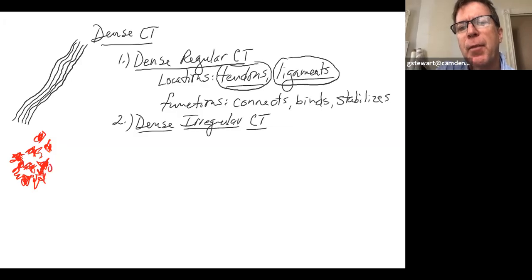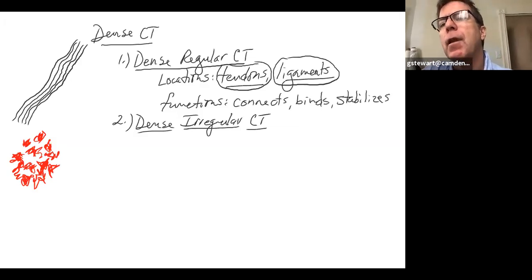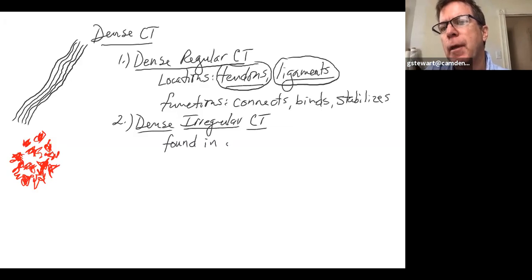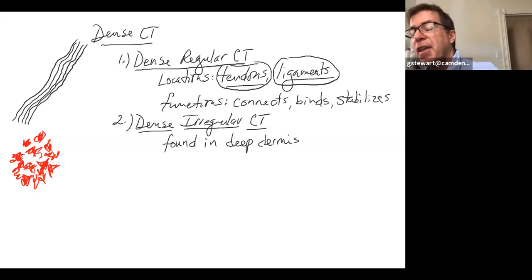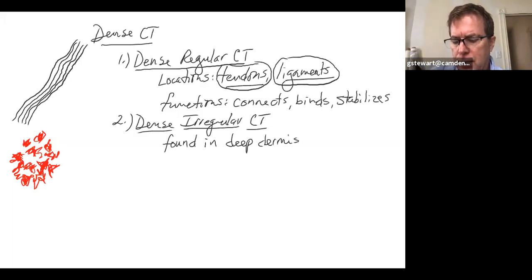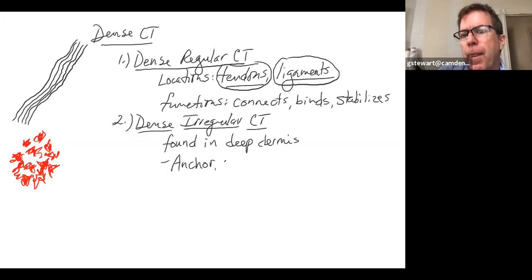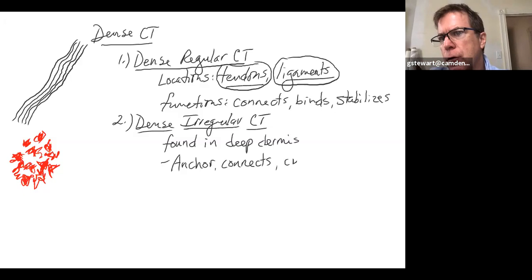Dense irregular CT is found largely in the deepest layers of the skin — the deep dermis, making up the final thickest layer of skin. Its functions are anchoring, binding, connecting; it's highly vascular and can also cushion, providing a lot of cushioning for our integument.